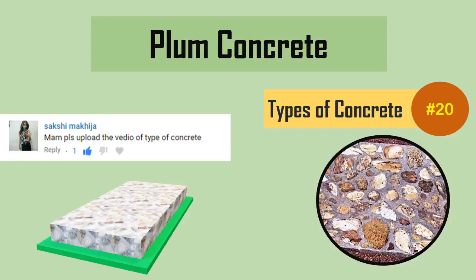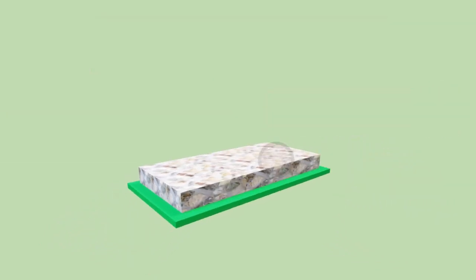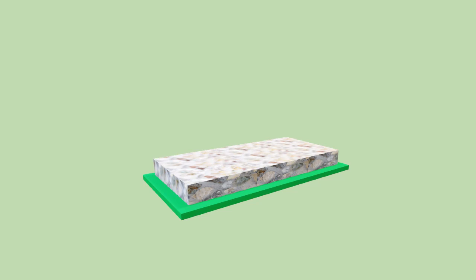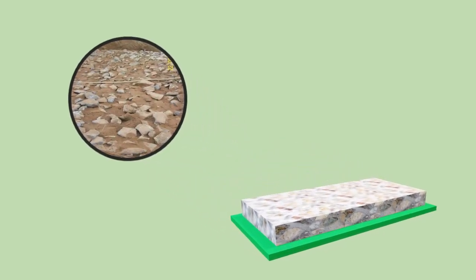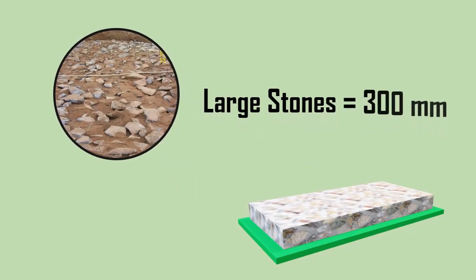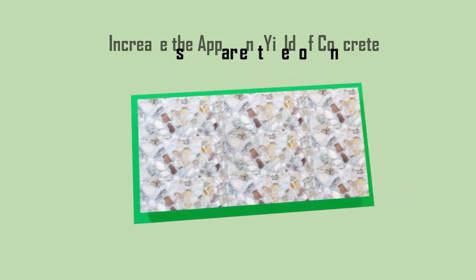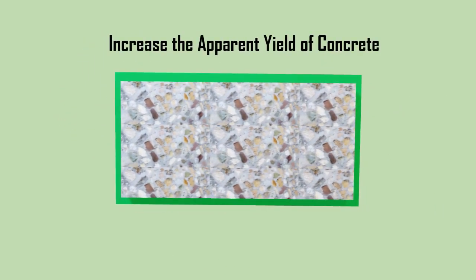Plum Concrete is a type of concrete which are formed by inclusion of large stones of size up to 300 mm in a normal concrete in order to increase the apparent yield of concrete for a given amount of cement.